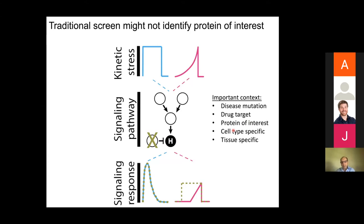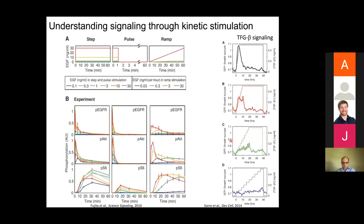This kind of temporal pattern can be cell-type specific and tissue specific. In the literature there are examples for EGF signaling where people have used step pulses or ramp profiles which activate different downstream signaling pathways, and these pathways can exhibit very different dynamics. Another example is TGF-beta signaling, where fast activation causes an adaptive response, but a slow increase results in only minimal or no activation at all.